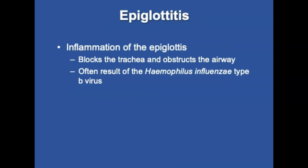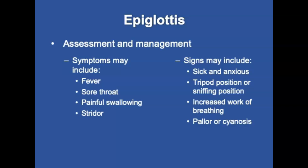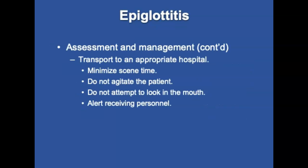Epiglottitis is inflammation of the epiglottis that blocks the trachea and obstructs the airway. It's often a result of type B influenza virus. Patients will have fever, sore throat, pain with swallowing, and stridor — an upper airway blockage with respiratory distress. Patients will look sick and anxious, sitting in the classic tripod or sniffing position, usually drooling, with increased work of breathing and possible cyanosis. Transport to the appropriate facility while maintaining the airway. Minimize scene time, do not attempt procedures that could agitate the patient, and do not attempt to look in the mouth. Alert receiving personnel of suspected diagnosis and patient condition.